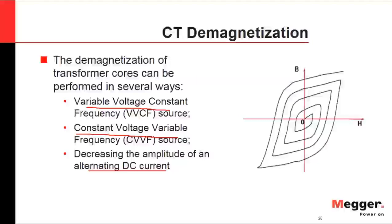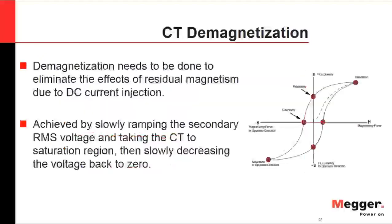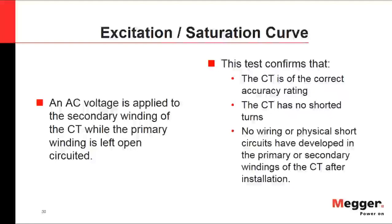To demagnetize a CT, you must first reach saturation, then apply a sinusoidal voltage and increase it until the core saturates, then decrease the magnitude back to zero — at which point you expect zero core flux and zero remnant flux. The excitation and saturation curve test following demagnetization is an AC test where we increase the AC voltage applied to the secondary winding and simultaneously measure the secondary winding current.